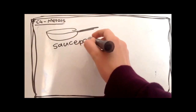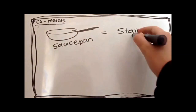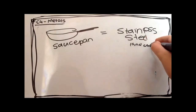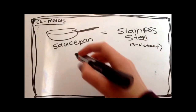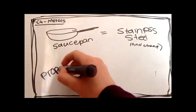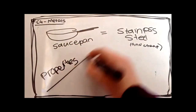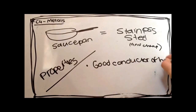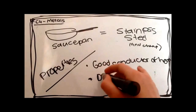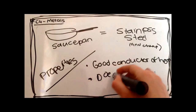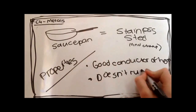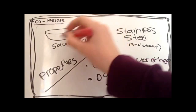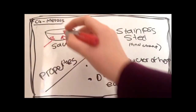Matching a metal to its use: saucepans are made of stainless steel, which is also cheap. This is because it has the properties of a good conductor of heat, and it doesn't rust easily, which is important for a saucepan.